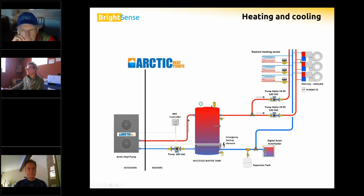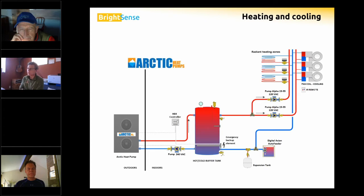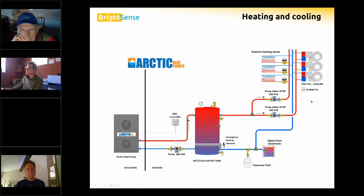This system also shows fan coils for cooling. We could do radiant cooling — if you have an in-slab radiant system, it can be used for cooling — but we need to stay away from the dew point; we don't want condensation on our floors. Fan coils are a simpler way of doing air conditioning, though radiant cooling is very comfortable with no draft or noise.